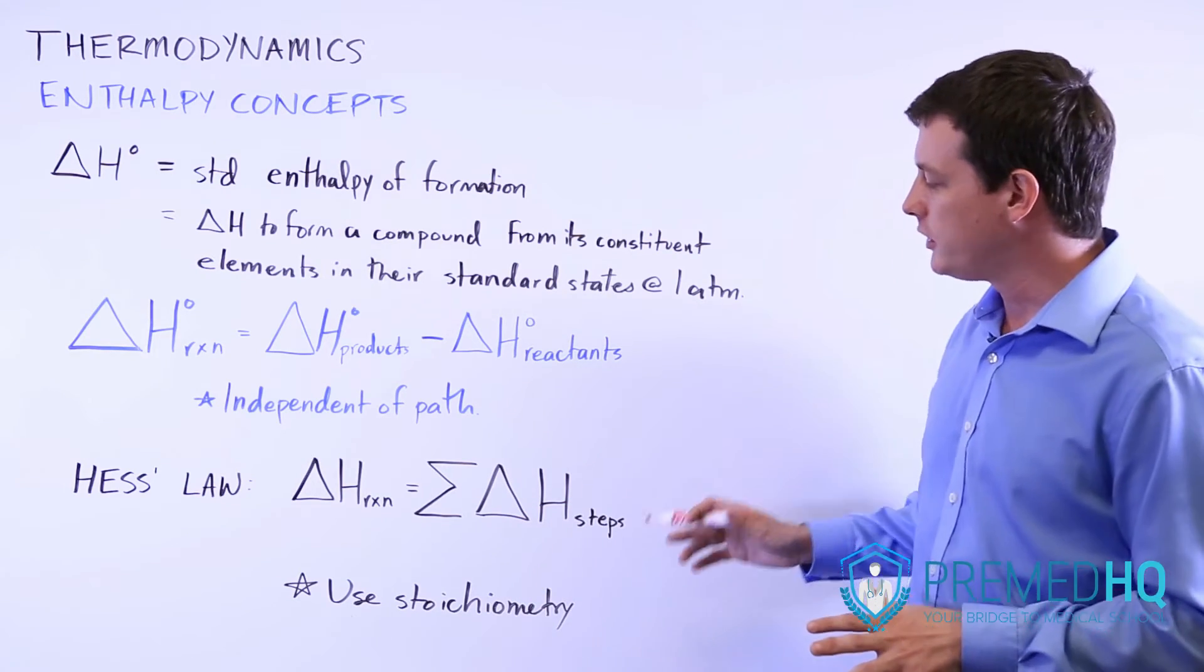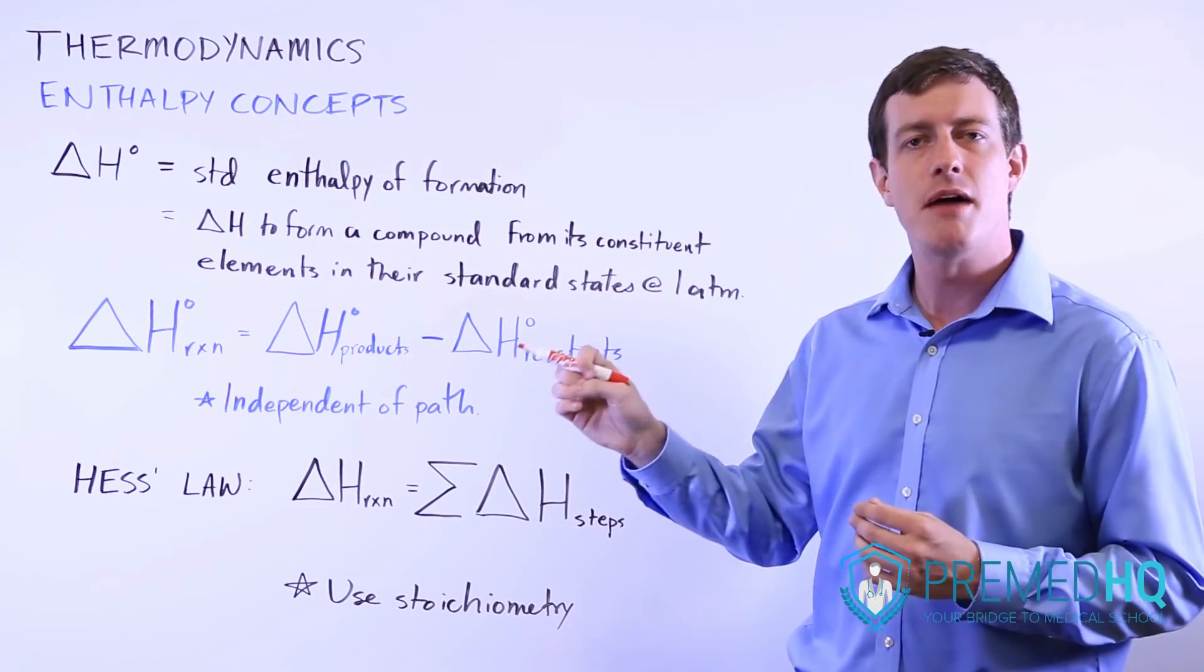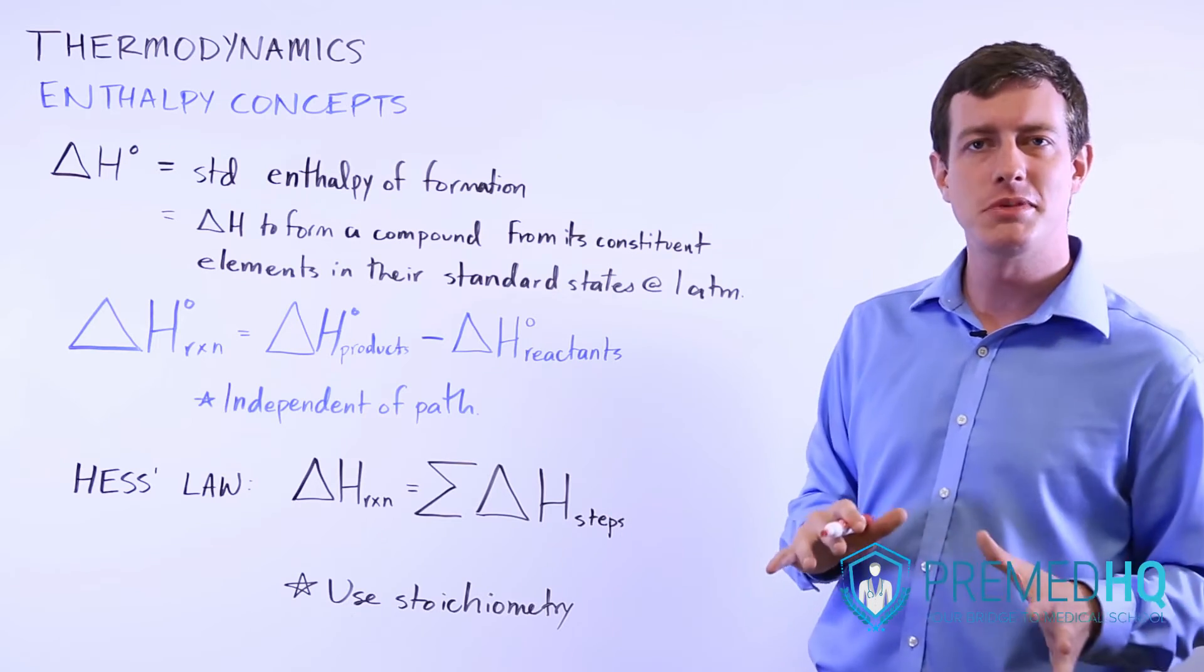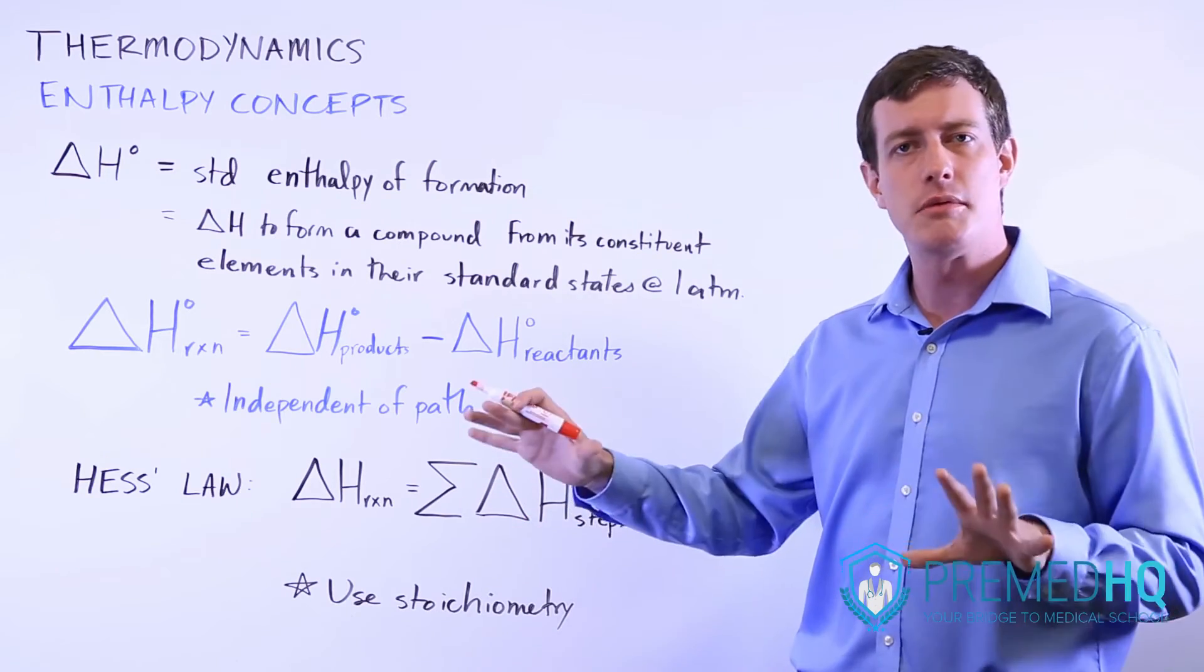In this one you use stoichiometry, so you'll multiply it by two if a step happens twice. This is unlike your standard reduction potential which you use in batteries. That's one that you never multiply by stoichiometry.